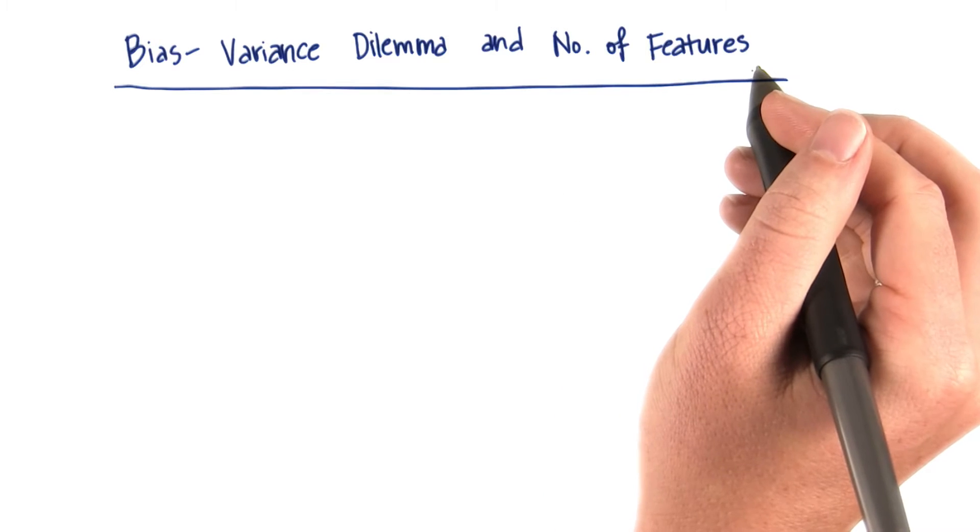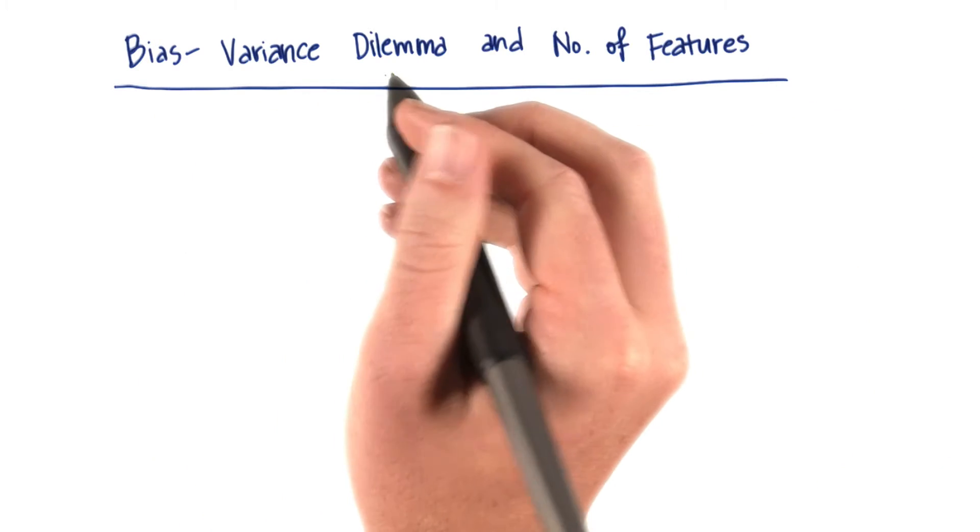Let's dig in a little more to see how the number of features that you use in your algorithm is connected to the bias-variance dilemma.